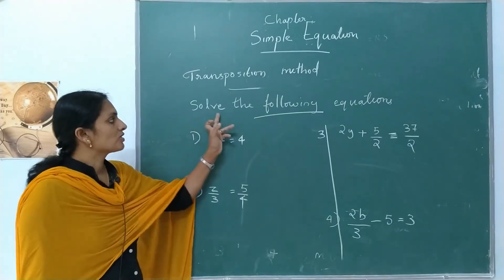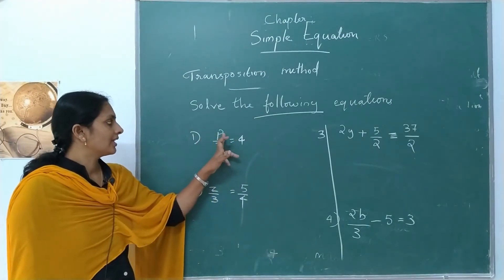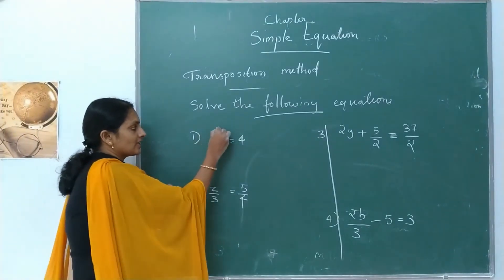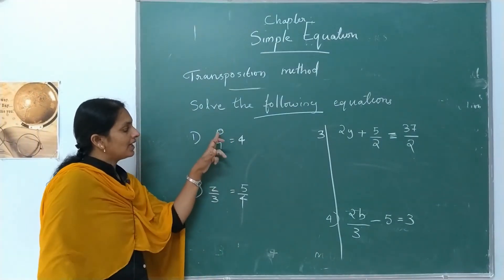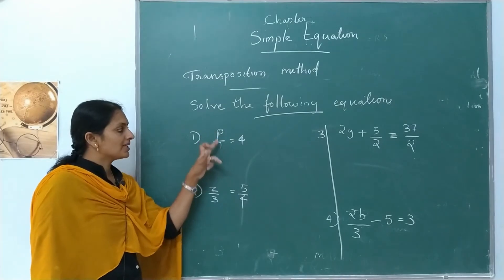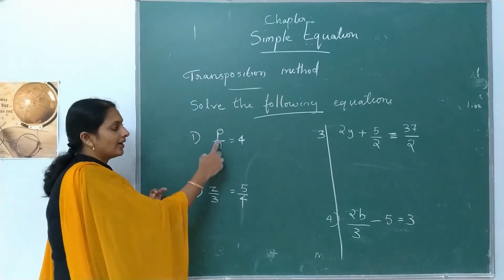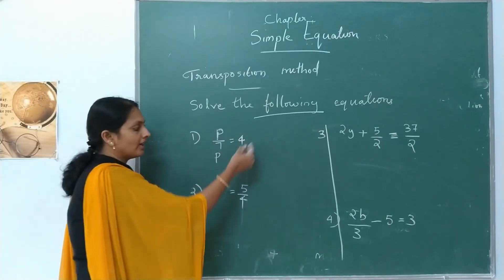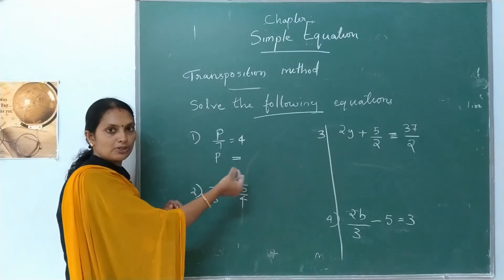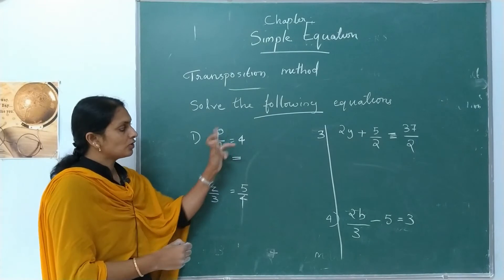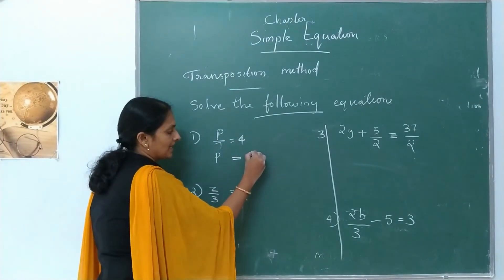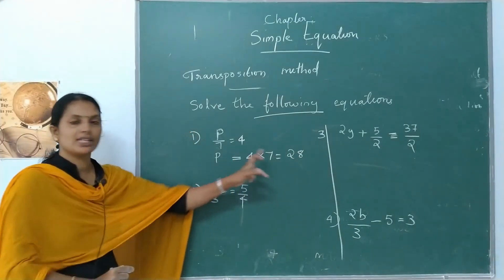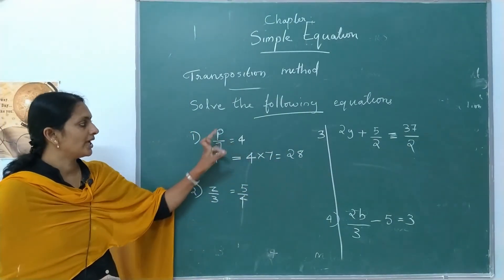Next, solve: P divided by 7 is equal to 4. In LHS, P by 7 — transpose 7. Division becomes multiplication on the RHS. That is 4 into 7 is equal to 28. The value of P is equal to 28. Check: 28 divided by 7 equals 4. Correct.